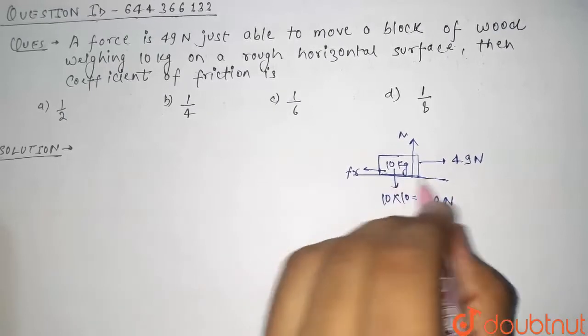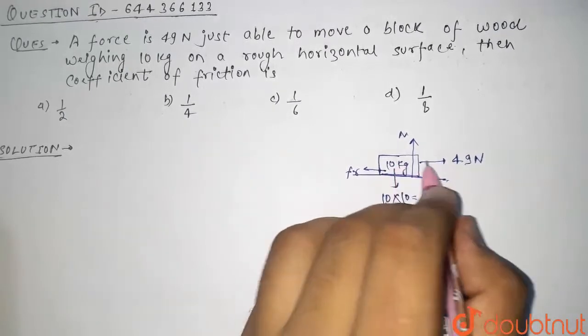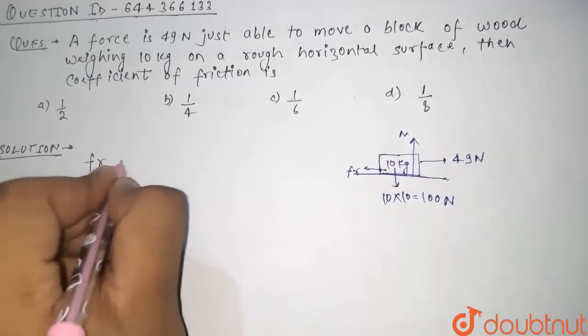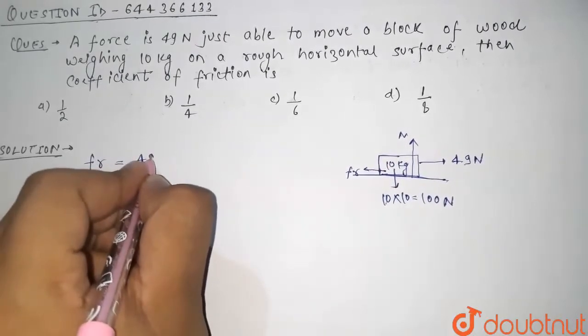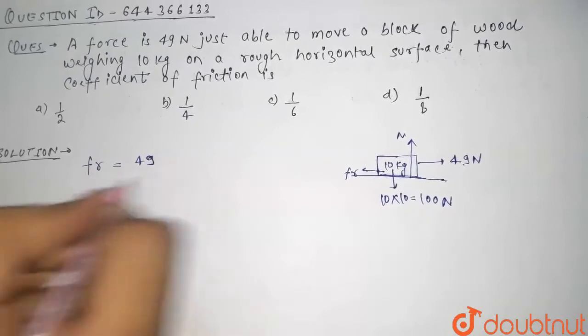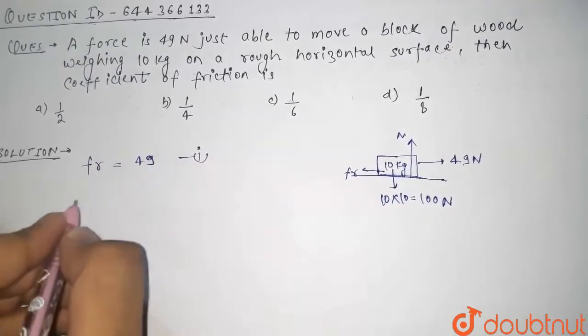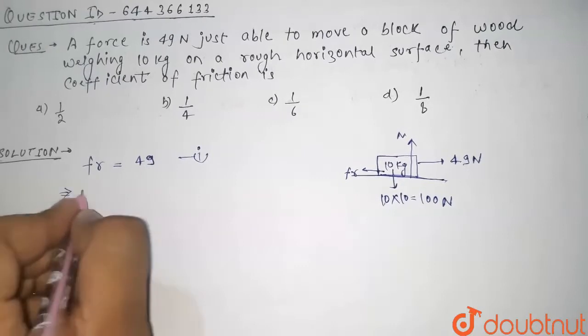So guys, see here if the block is just about to move, then we can say that the friction value is equal to 49 newtons. This is our first equation. But we know that friction is nothing but mu into normal, that is equal to 49.